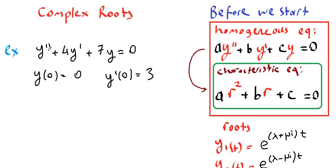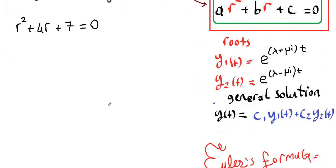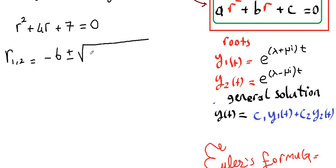Our first step is to convert our homogeneous equation into the characteristic equation. So y double prime becomes r squared, 4y prime becomes 4r, and 7y becomes 7, all equal to 0. Now we solve for r using the quadratic formula: r1, r2 equals negative b plus or minus the square root of b squared minus 4ac, all over 2a.